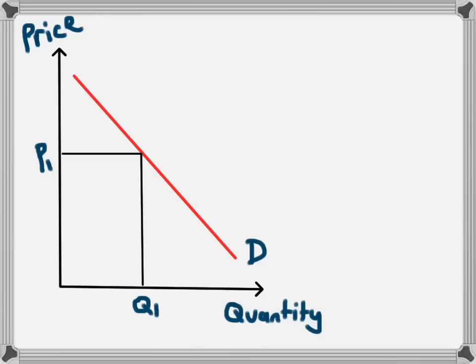At the moment the price of this product is P1 and at P1 people will demand Q1 of this product. If there was a change in the price we would move up and down this demand curve and the quantity demanded would change. If however there was a change in something other than the price the demand curve might actually move.